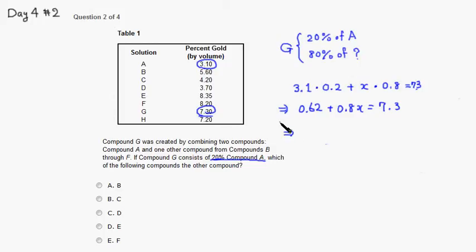Alright, then we can subtract 0.62 from both sides, so 0.8x equals 6.68.